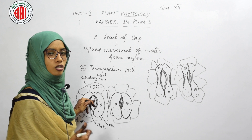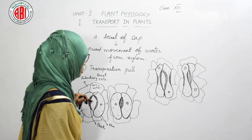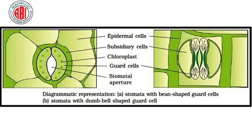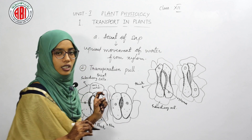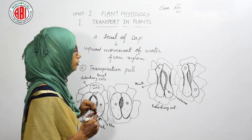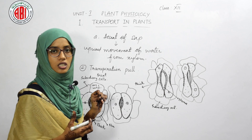When we observe the structure of monocot plants, we can see dumbbell-shaped guard cells — two dumbbell-shaped guard cells are present, around which subsidiary cells are present as in dicots. In monocot plants, both the outer wall and the inner wall are thickened. Like in dicots, it also shows a pore or opening called stoma.